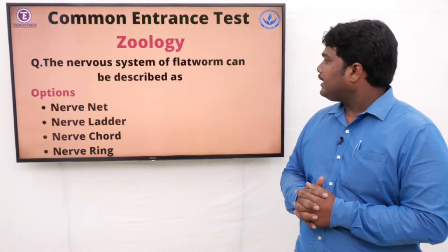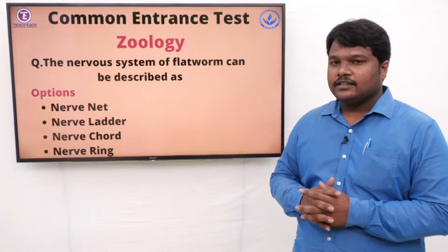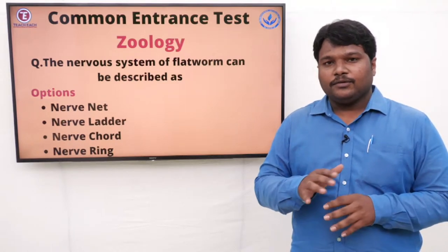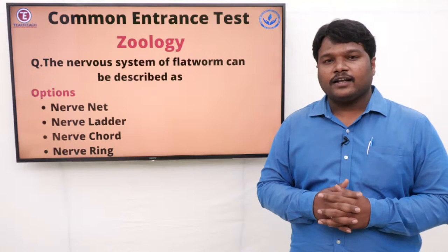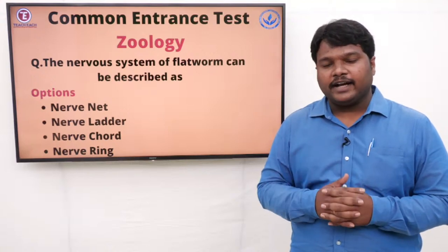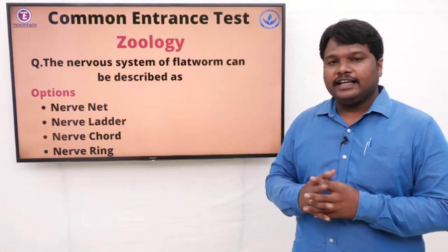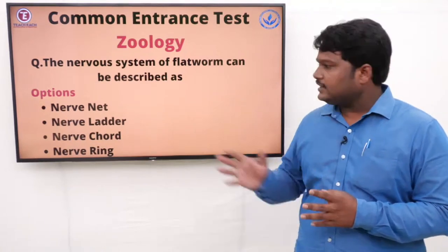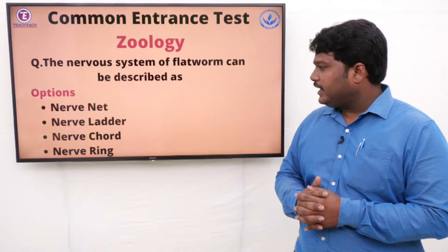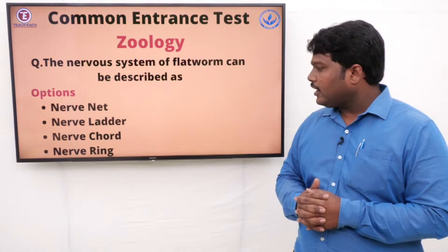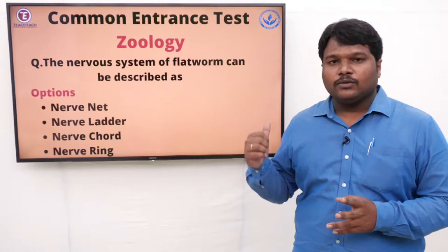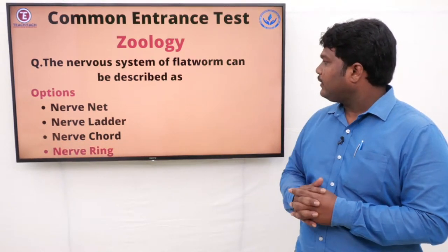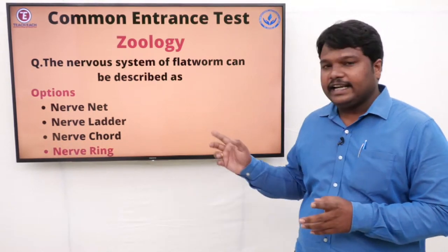Question 20: The nervous system of flatworm can be described as. You all know flatworms because you will conduct some dissections in your zoology lab and also have practicals. The options are: A) Nerve Net, B) Nerve Ladder, C) Nerve Cord, D) Nerve Ring. The right answer is Nerve Ladder.